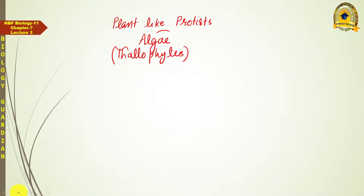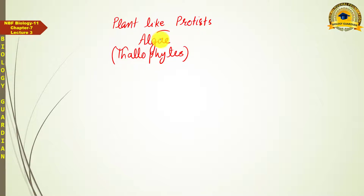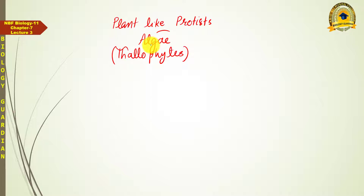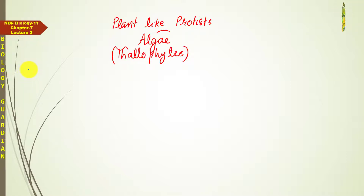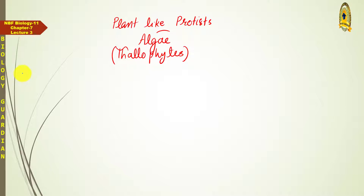Previously, algae were included in the plant kingdom, even in Robert Whittaker's classification. But when modifications were made to Whittaker's five-kingdom system of classification in 1998 by Margulis and Schwartz, after those modifications, algae were separated from the plant kingdom. Since then, algae have been part of Kingdom Protista. Now we will explain their relationship with plants and highlight why they were excluded from Kingdom Plantae.